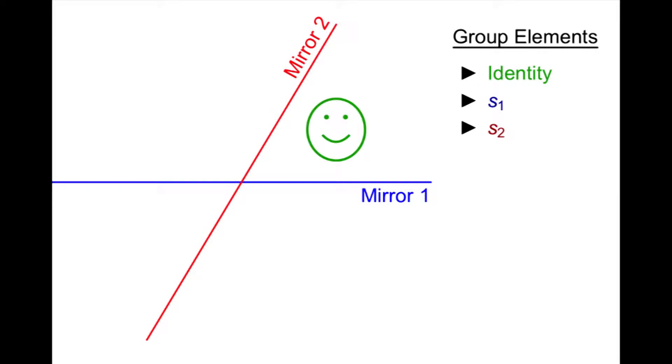Now, what about sequences of two reflections? If we flip over the same mirror twice, then we get back to where we started. So that's not a new group element, it's just the identity.